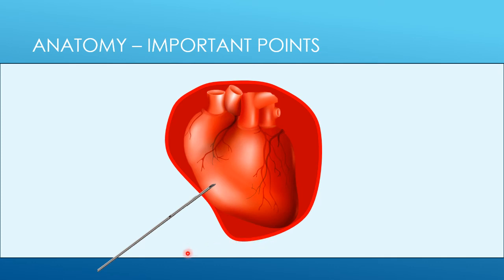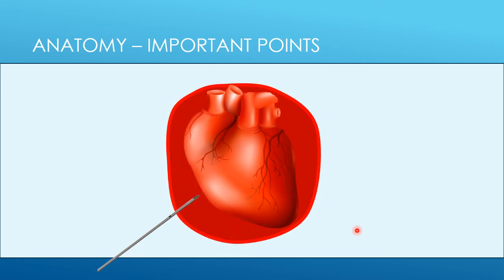If you aspirate blood, it's important not to suddenly pull the needle back thinking you need to start again. All you need to do is retract the needle slightly. As soon as the needle goes through the pericardial sac it will pop back, and if you simply pull the needle back a centimetre or two, you can be within the pericardium and get your wire deployed.